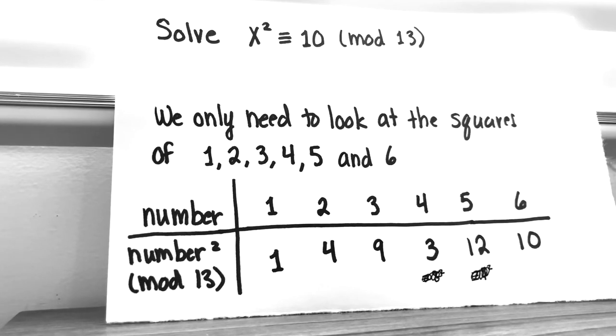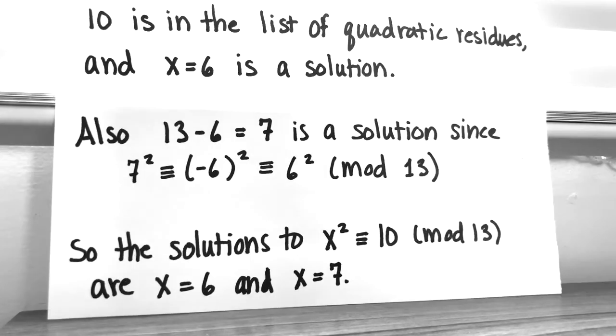So since our modulus is 13, then we square 1, 2, 3, 4. 4 squared is 16, which is congruent to 3 mod 13, 5, so 5 squared is 25, 25 minus 13 is 12. And then 6 squared is 36, so 36 minus 13 minus 13 leaves us with 10. The solution that we got from our list of squares is x equals 6.